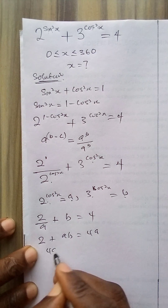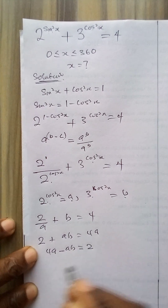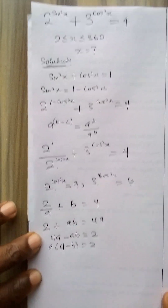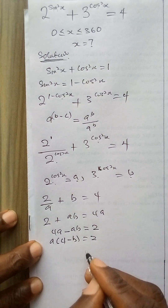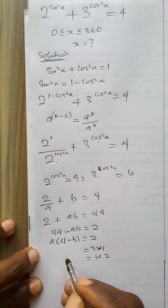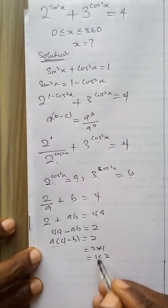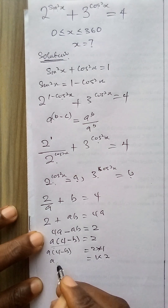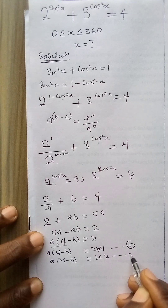Collecting like terms: 4a minus ab is equal to 2. Factorizing a out: a(4 minus b) is equal to 2. Since 2 is a prime number it can be written as 2 times 1 or 1 times 2. So I am going to equate these products to each expression, forming equation 1 and equation 2.